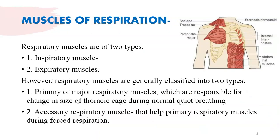For inspiration and expiration, there are two types of muscles involved: inspiratory muscles and expiratory muscles. In both categories there are two subcategories. The muscles majorly responsible for the change in size of the thoracic cage are called primary muscles, and the muscles that help the primary muscles during forced respiration are called accessory muscles.